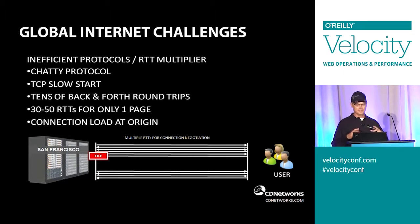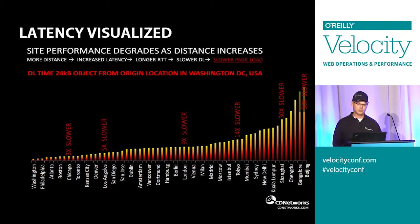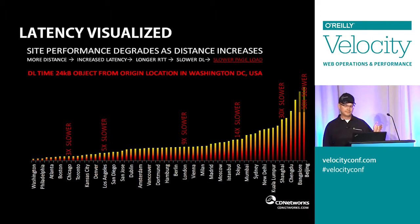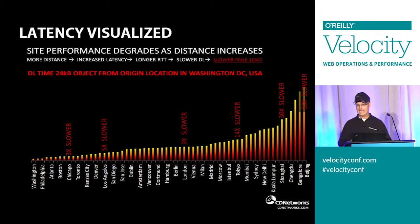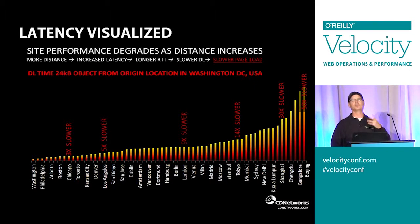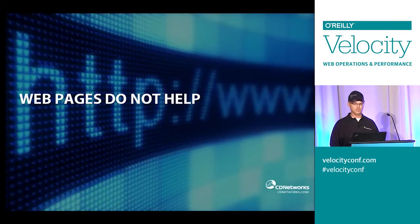All of those together represent a lot of challenges with global performance. Here's a representation of what you might see — this happens to be a 24k object from the east coast of the United States. As it pushes out to Midwest and West Coast and across the ocean, you can see the distance gets greater and greater, and it's multiple times slower for the content to load. The one on the far right is Beijing, and anything behind the Great Firewall of China has some extra milliseconds as well.